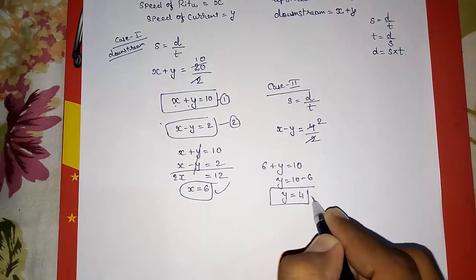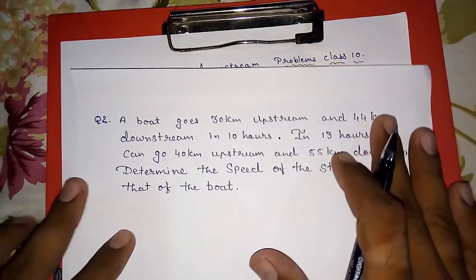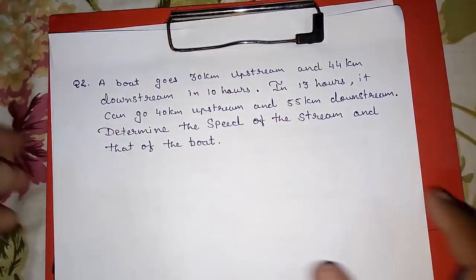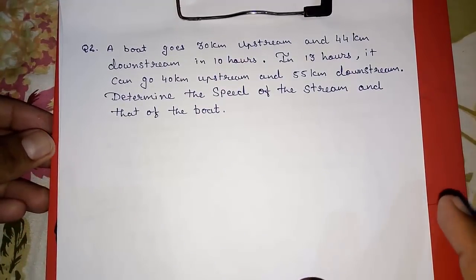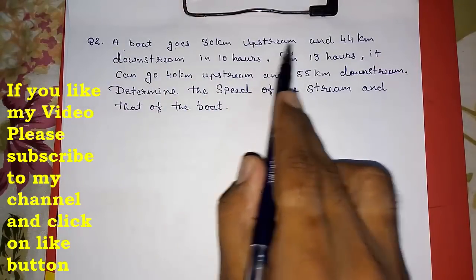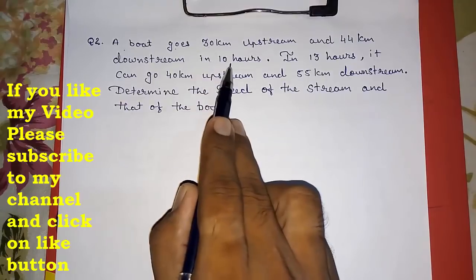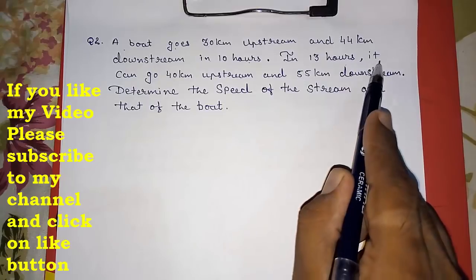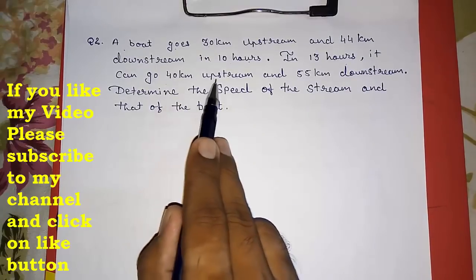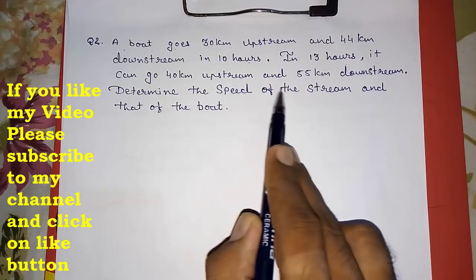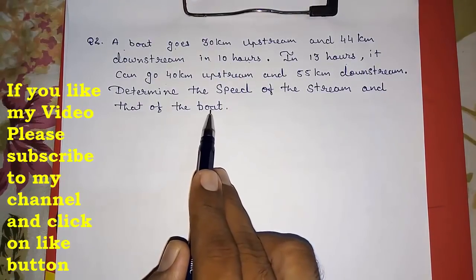Now I am going to solve the second question. This sum is a little bit lengthy. A boat goes 30 km upstream and 44 km downstream in 10 hours. In 13 hours, it can go 40 km upstream and 55 km downstream. We need to determine the speed of the stream and the speed of the boat.